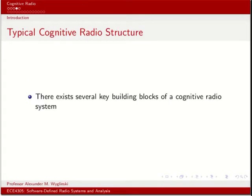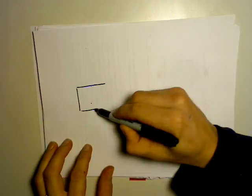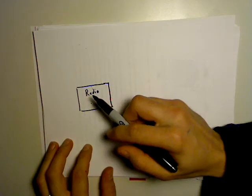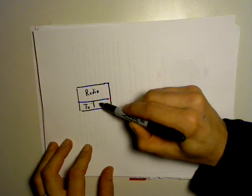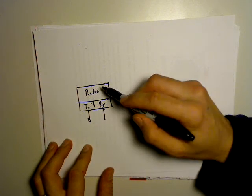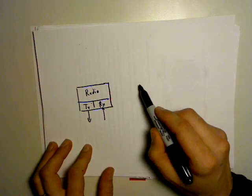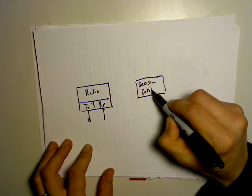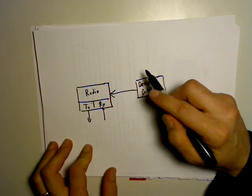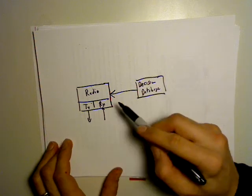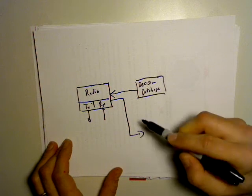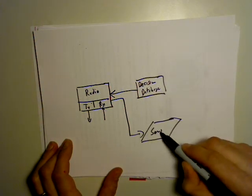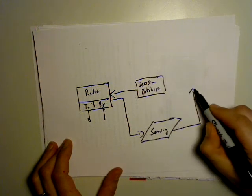There are some basic building blocks behind a cognitive radio. First, you have the radio platform itself, which has a transmit and a receive structure — a transmitter sends out information and a receiver picks up information. There is also some sort of decision-making process or decision database that tells the radio how to be implemented. Additionally, the radio, especially from the receiver, provides sensing information.